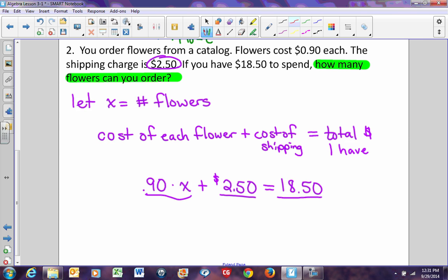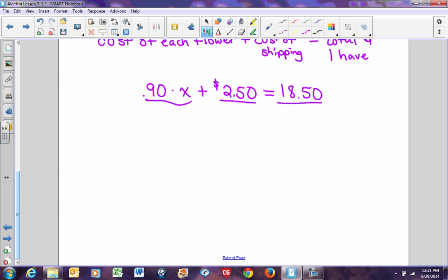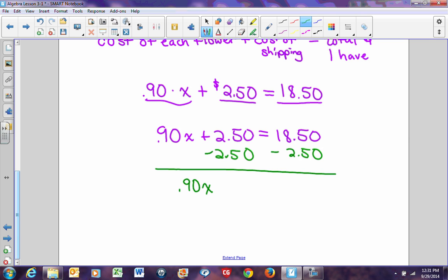So we have 0.90x plus 2.50 equals $18.50. The first thing we need to do is undo addition and subtraction, so we'll subtract 2.50. We'll get 0.90x. $18.50 minus $2.50 is $16. Take 16 and divide it by 0.90, and x will equal 17.7 repeating.